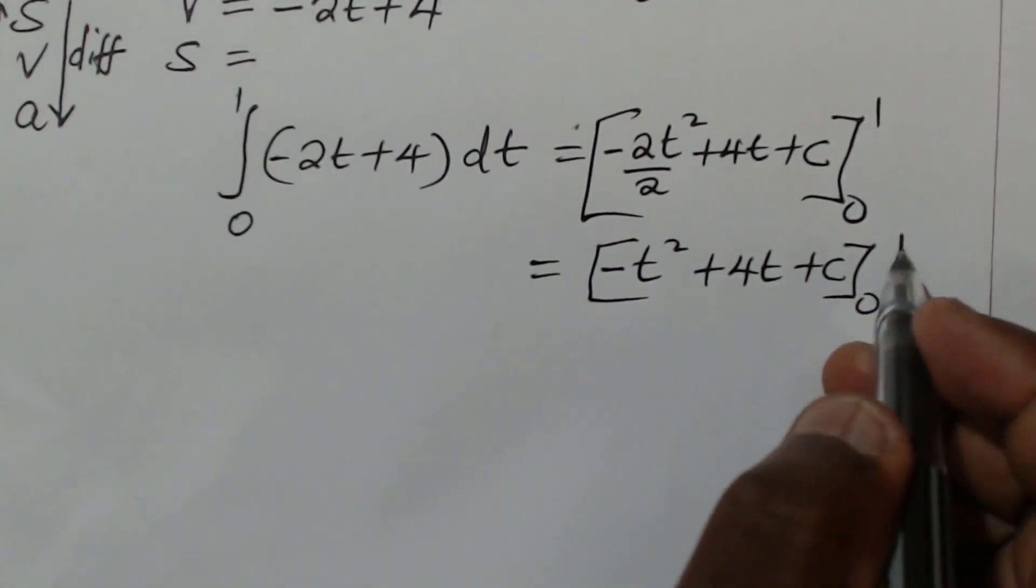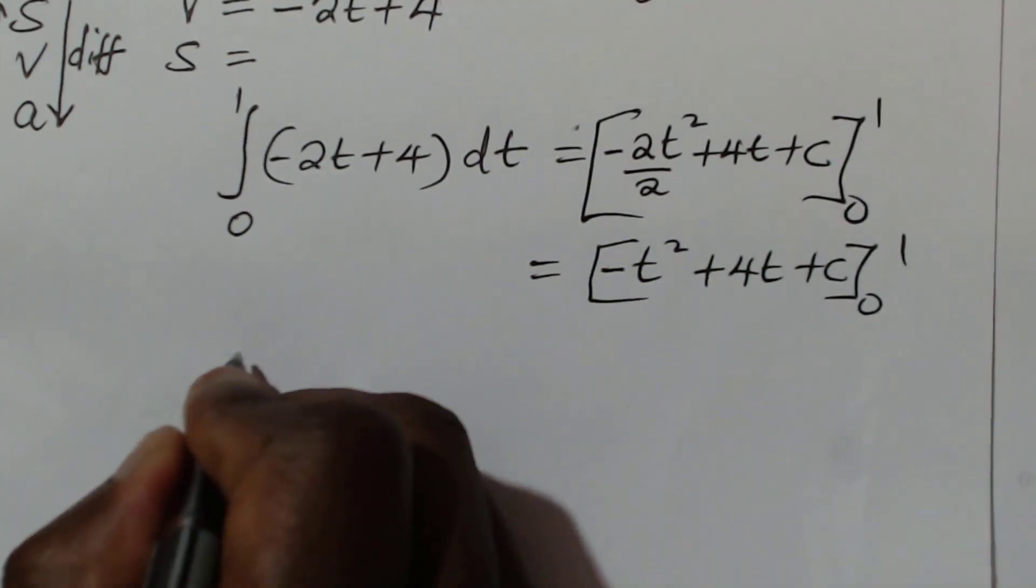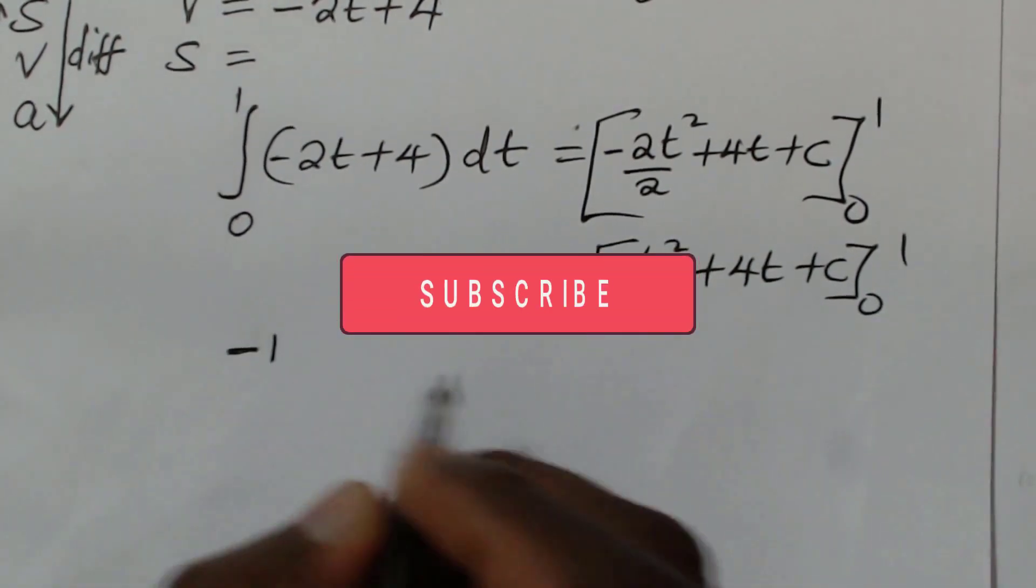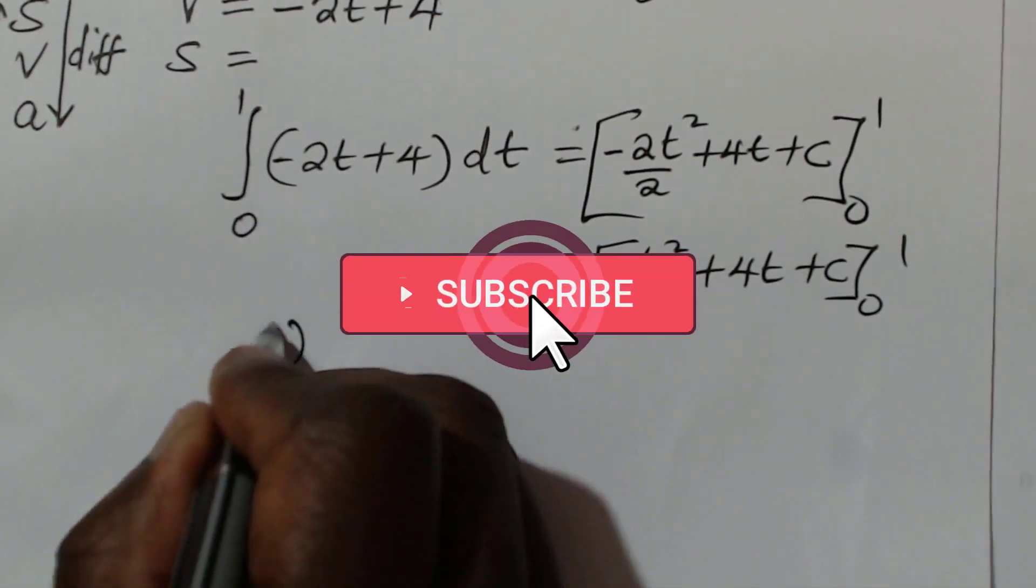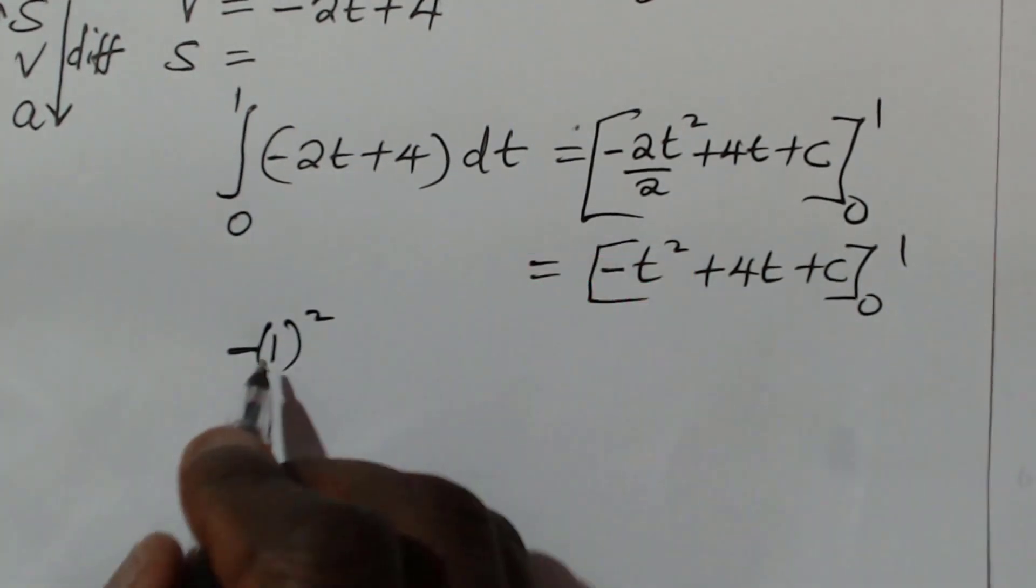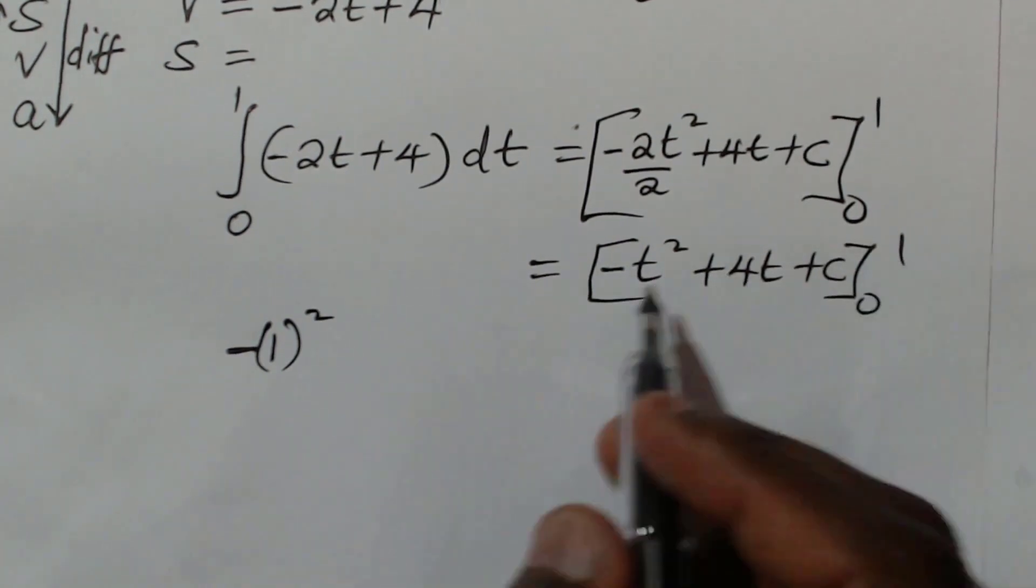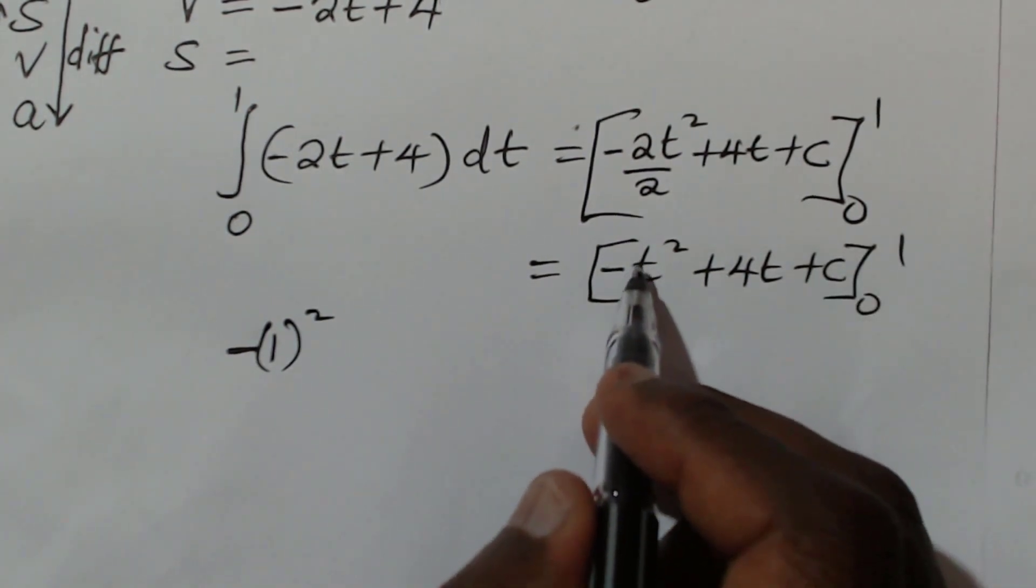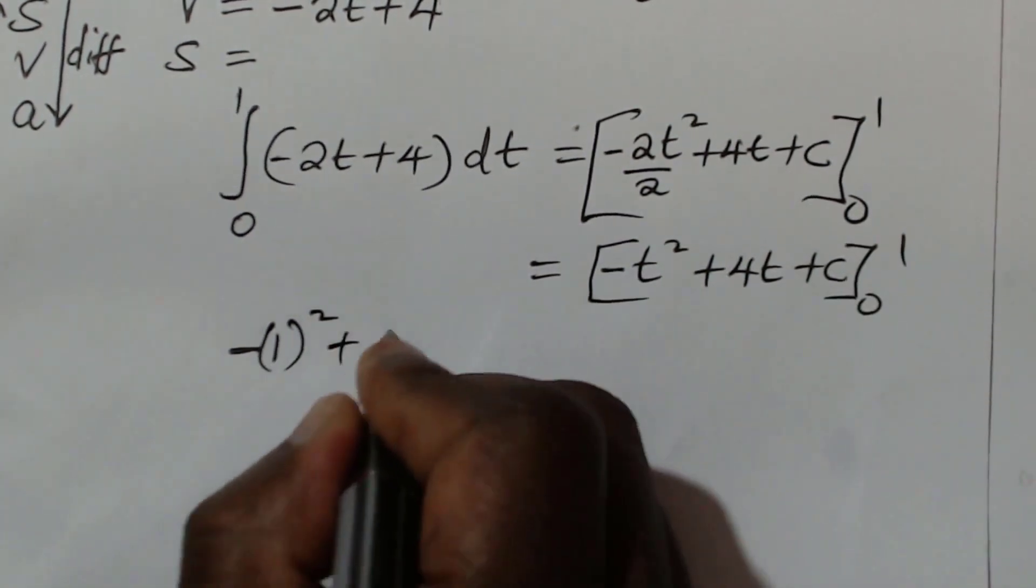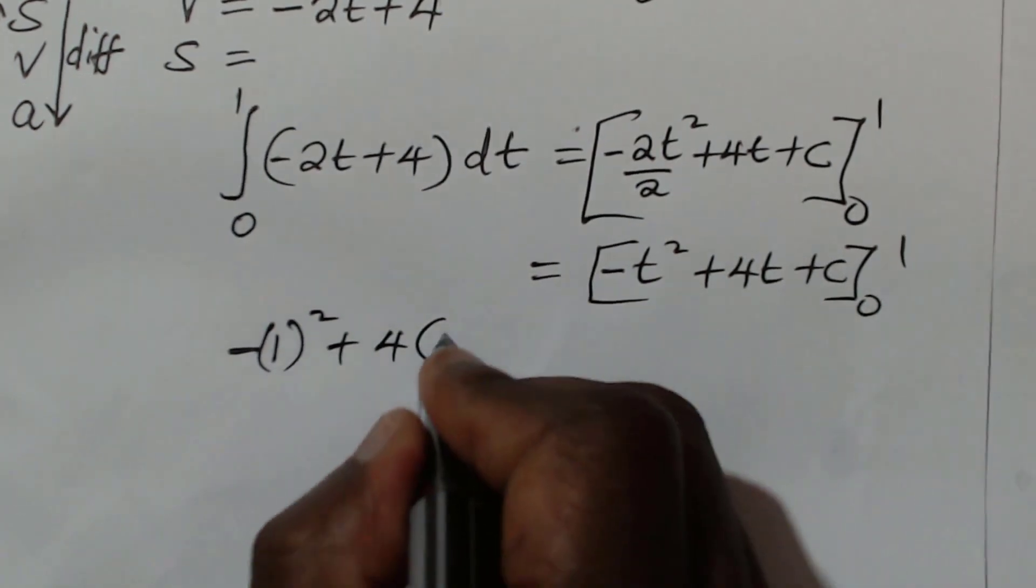So you substitute 1 when t equals 1. So it will be negative 1 squared. That is what I mean by negative t squared, negative 1 squared. Let's be very careful that we put the bracket. We're just substituting t with 1. So t is 1, then plus 4t is 1.